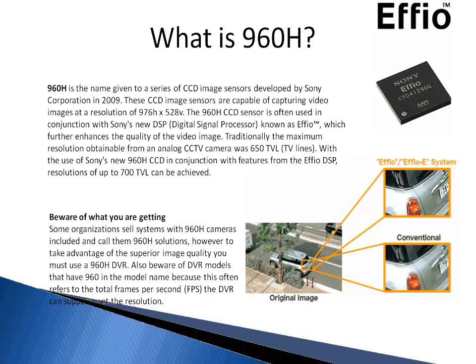Make sure to exercise caution because some organizations will sell systems with 960H cameras included and call them 960H solutions. However, to take advantage of the superior image quality, you must use a 960H DVR, which are not readily available on the market presently. Also, be aware of DVR models that have 960 in the model name, because this often refers to the total frames that the DVR can support, not the resolution.